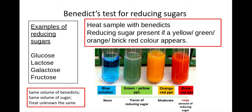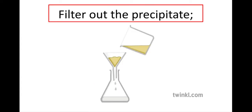Heating it with Benedict's and getting that color. Now once you've got those different colors from your Benedict's test, you would then filter out the precipitate. So the precipitate is the color that is formed from the Benedict's reaction.